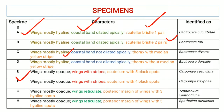Next, for specimens with wings mostly hyaline and costal bands not apically dilated, there is a further division: thorax with a median yellow stripe and thorax without a median yellow stripe. Specimens with hyaline wings, costal bands not dilated apically, and thorax with a median yellow stripe are Bacterocera diversa, while those without a median yellow stripe are Bacterocera dorsalis.